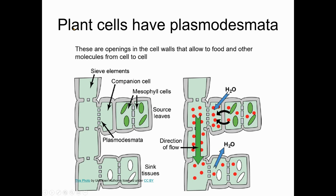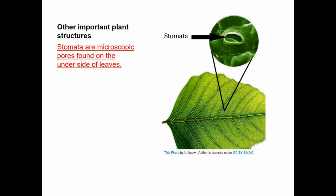Plant cells also have something called plasmodesmata. Because plant cells are these individual blocks separate from each other, if chloroplasts are doing photosynthesis and manufacturing sugar inside one cell, you need to be able to move that sugar out of your cell and all around the plant. Plasmodesmata are openings between cells that allow manufactured food to be transported from one cell to the next — it's like the highway for plants for moving things.